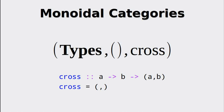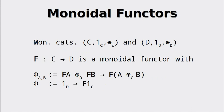We have seen monoidal categories, so one question we might want to ask is: is it possible to create a morphism between two monoidal categories? And indeed, that is possible — we call such a morphism a monoidal functor. Given two monoidal categories C and D with their own respective identity elements and tensor products, a functor from C to D is a monoidal functor with a natural transformation that maps the application of the tensor product of D in the context of the functor to the application of the tensor product of C with the context of the functor applied afterwards.